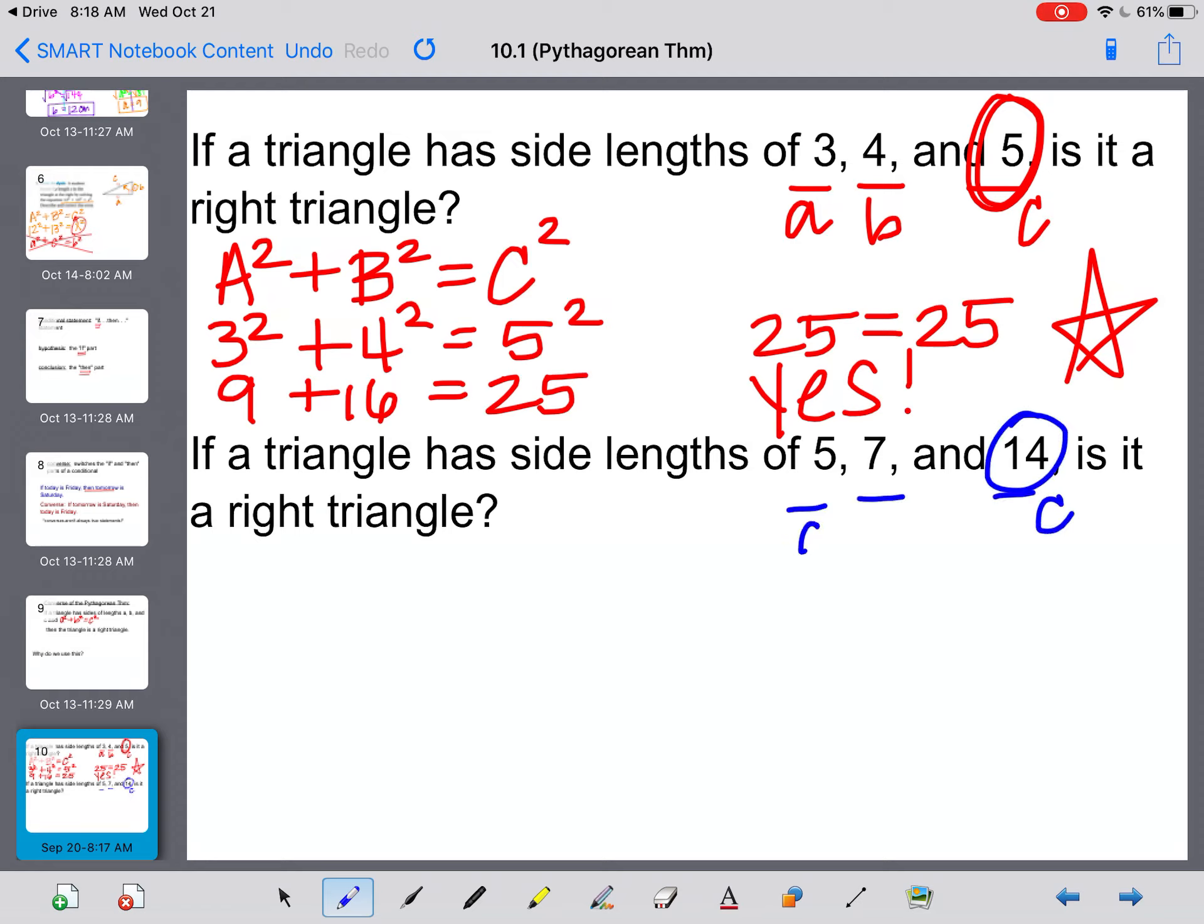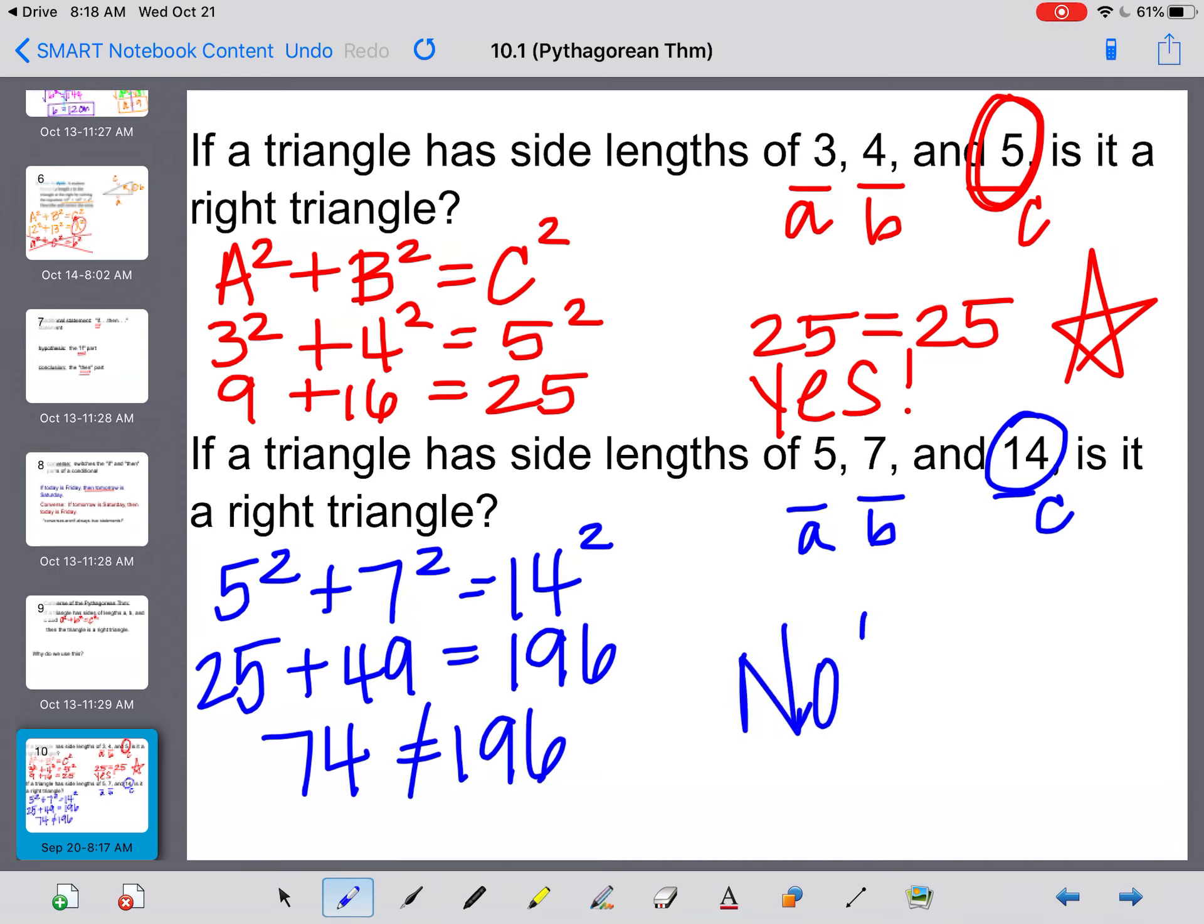The second one, they give me three different side dimensions, 5, 7, and 14. This is going to be my hypotenuse because it's the longest side, and those two I'm just going to label as the two legs. So I would get 5 squared plus 7 squared equals 14 squared. 5 to the second power is 25, 7 to the second power is 49, and 14 to the second power is 196. When I add 25 plus 49, I get 74, which does not equal 196, so this is not a right triangle.